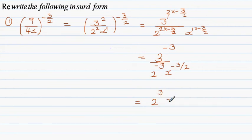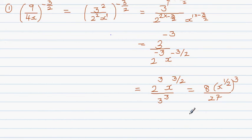This simplifies to 2 cubed times x to the power 3 halves over 3 to the power 3, which is 8 times x to the power half raised to 3, divided by 27. x to the power half is square root of x, so the simplified form is 8 times square root of x to the power 3, over 27. This is the simplified form in surd form.